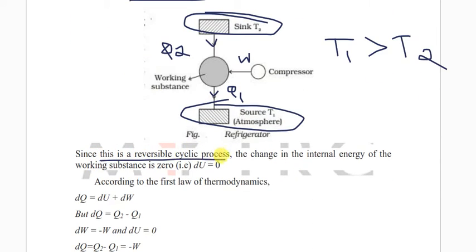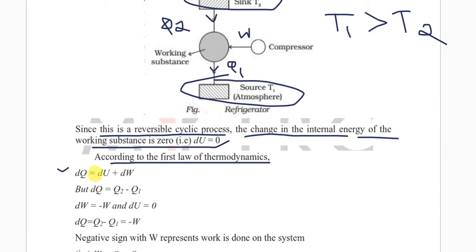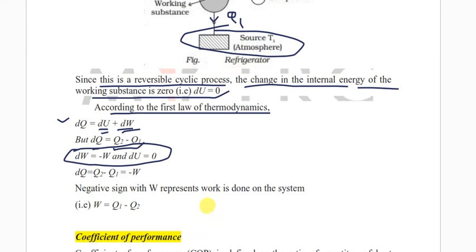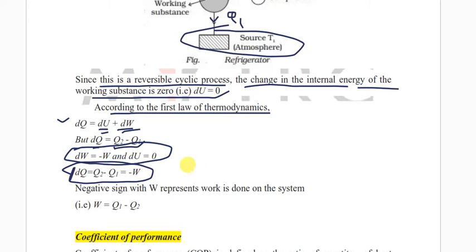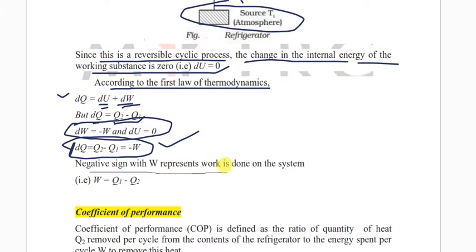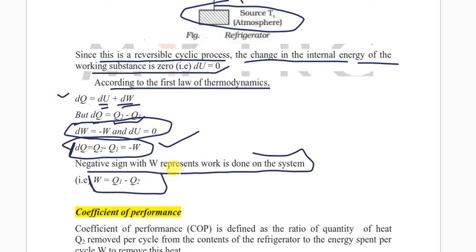Since this is a reversible cyclic process, the change in internal energy of the working substance is zero — dU = 0. According to the first law of thermodynamics, dQ = dU + dW. Here dQ = Q2 − Q1, dW = −W, and dU = 0. Therefore, Q2 − Q1 = −W, and the negative sign with W represents that work is done on the system. Hence, W = Q1 − Q2.